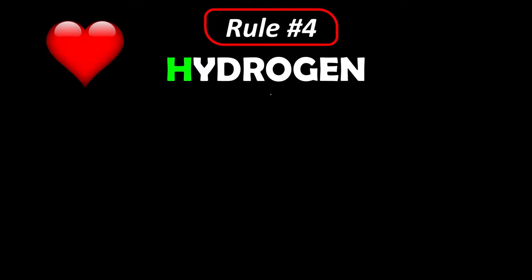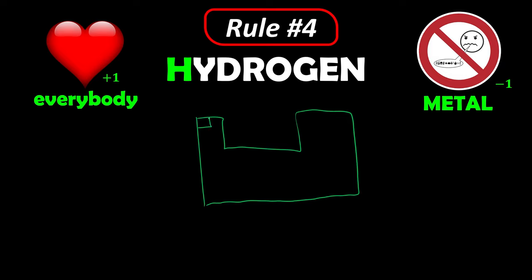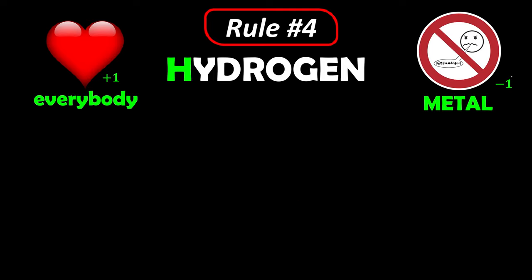Rule number four is H for hydrogens. Hydrogens love everybody, so when mixed with everybody the oxidation number is positive one, except when mixed with metals — hydrogen doesn't like metals, so the oxidation number becomes negative one. You can think of it this way: hydrogen is in group one on the periodic table, but it's not a metal, so it feels awkward, and when with metals, its oxidation number becomes negative one.